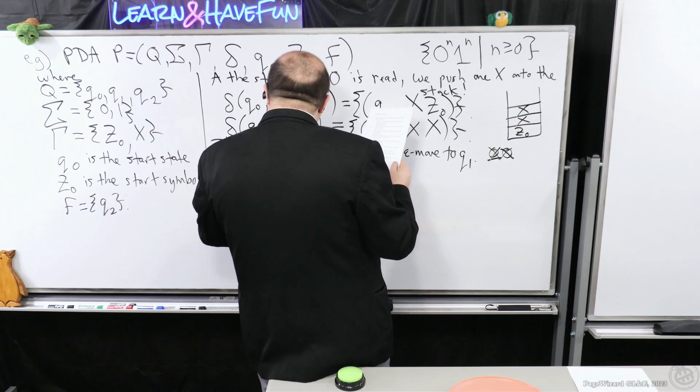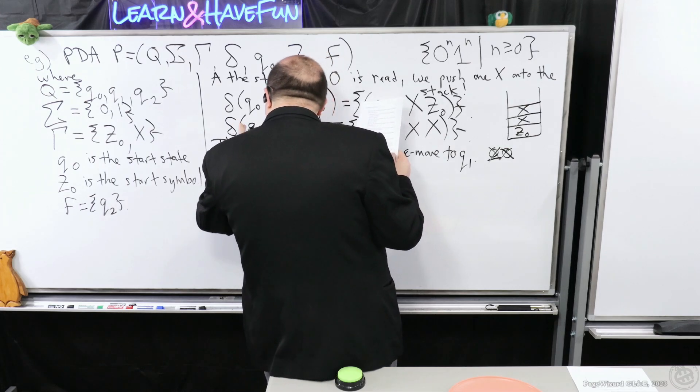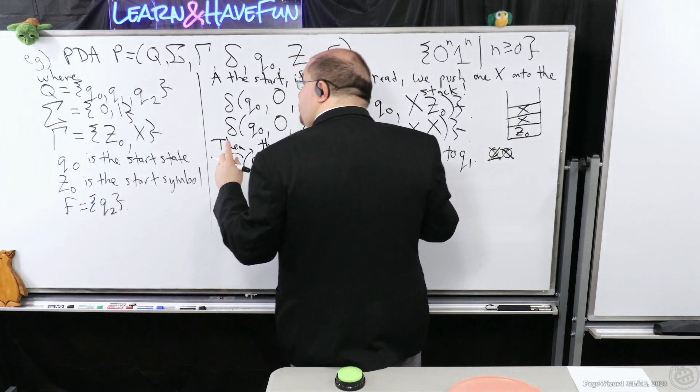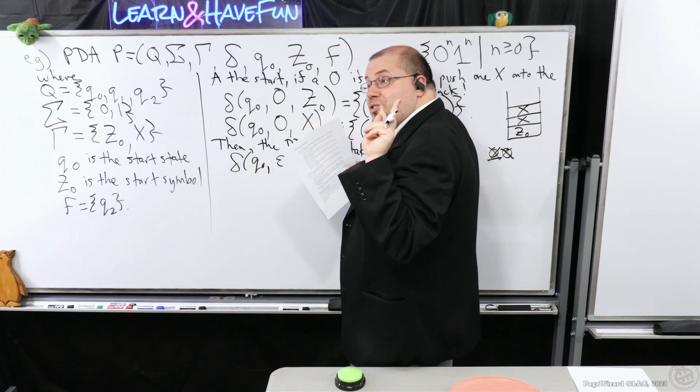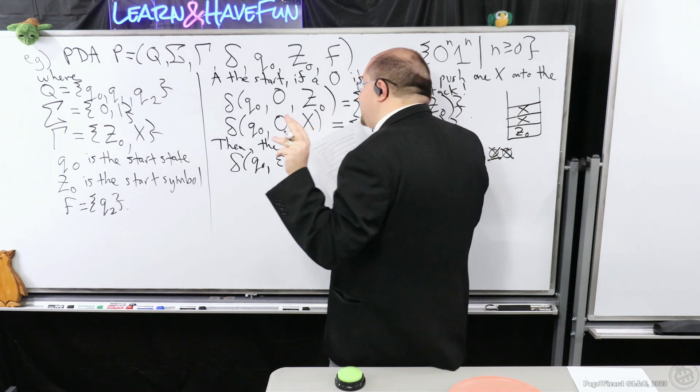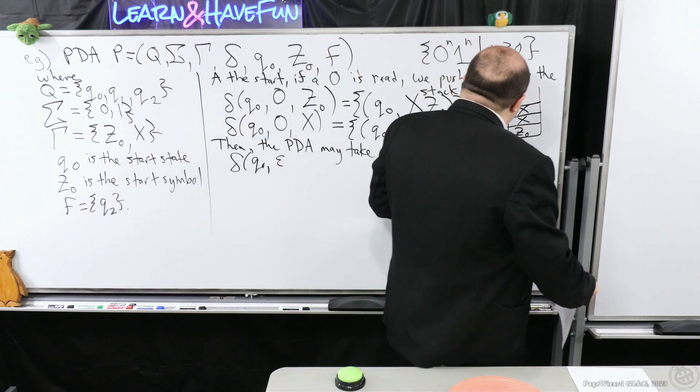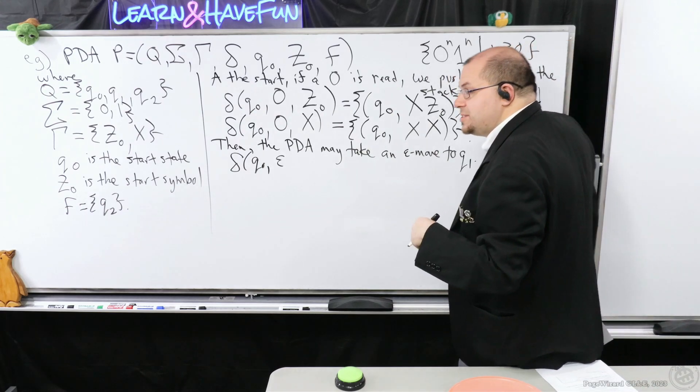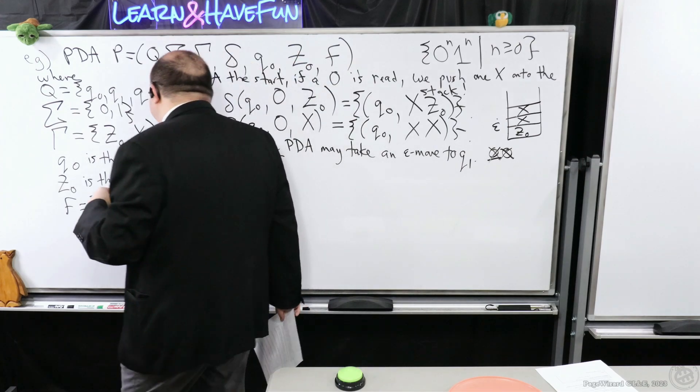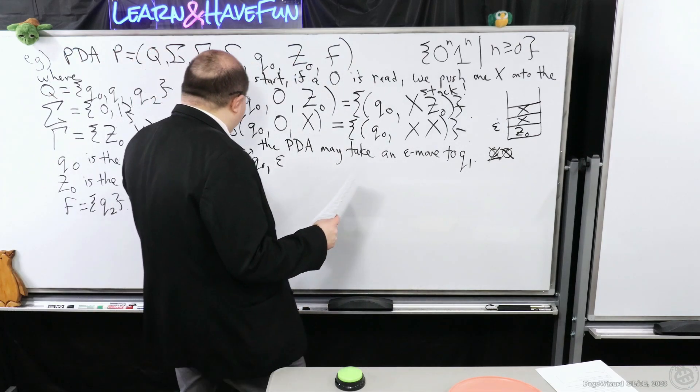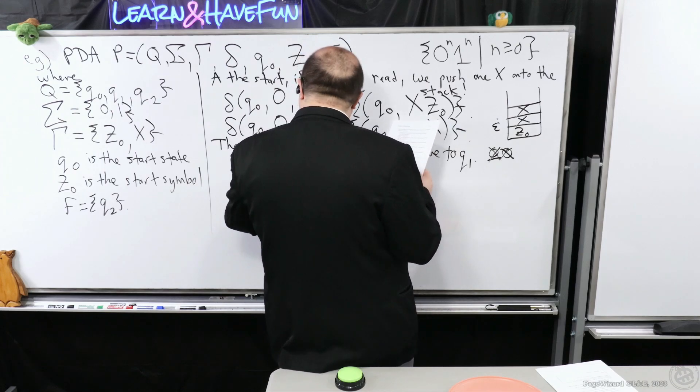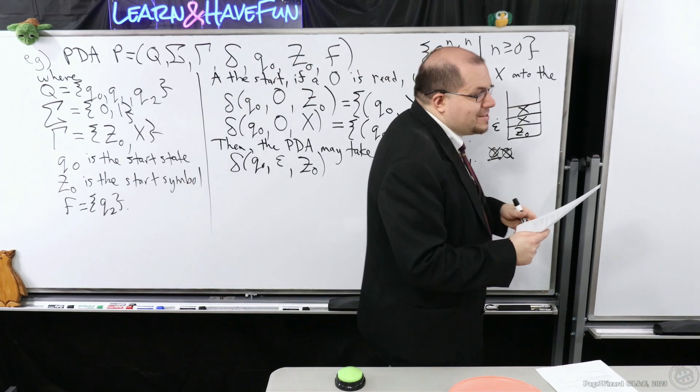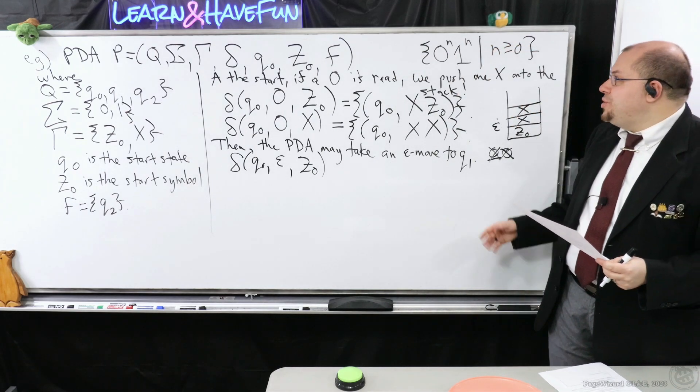But remember, now the way we process, now it depends on both the state and what the top of the stack looks like. So we need to account for two cases, because the stack might look differently for two possibilities. Because technically speaking, the empty string is a part of this language. It could be zero zeros and zero ones, which that's the empty string.